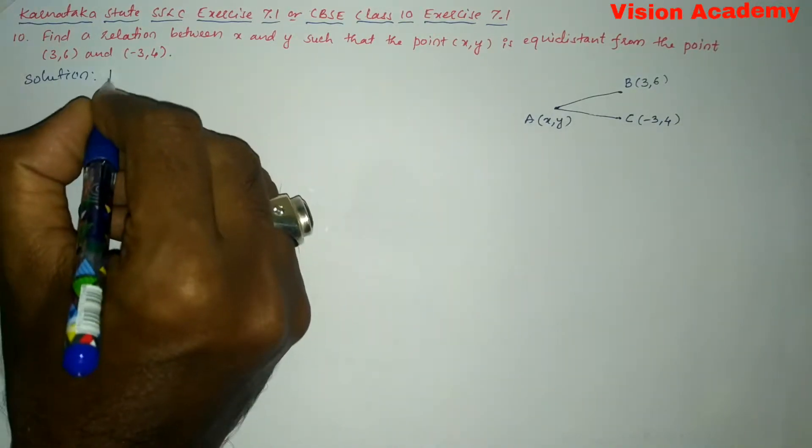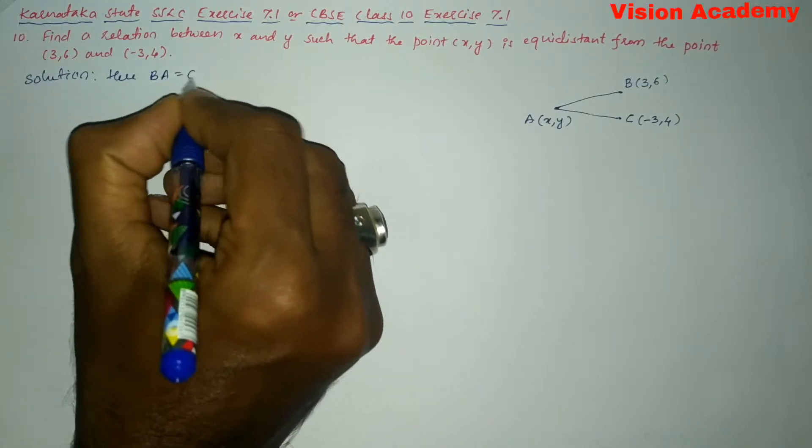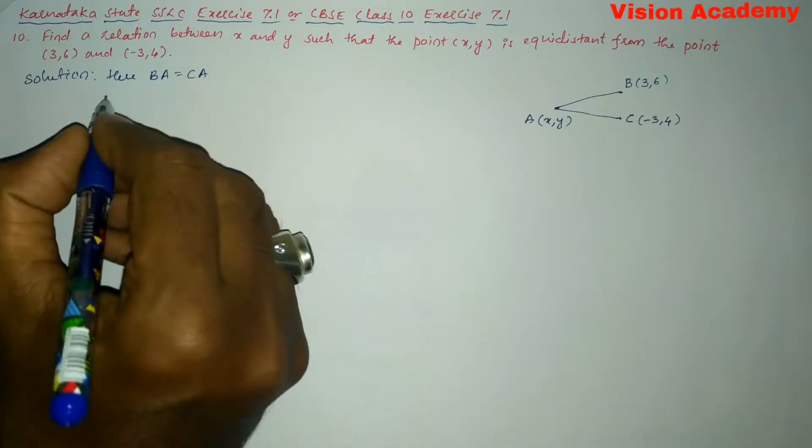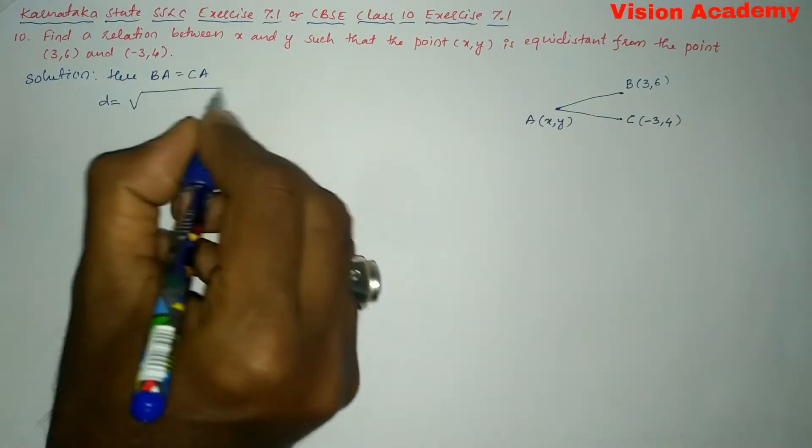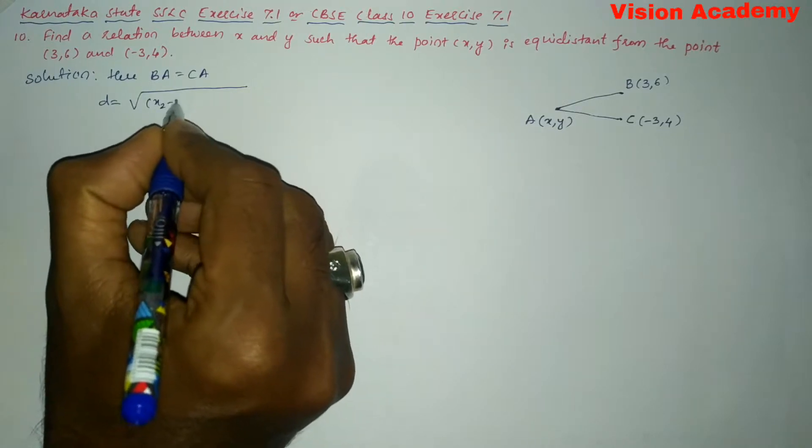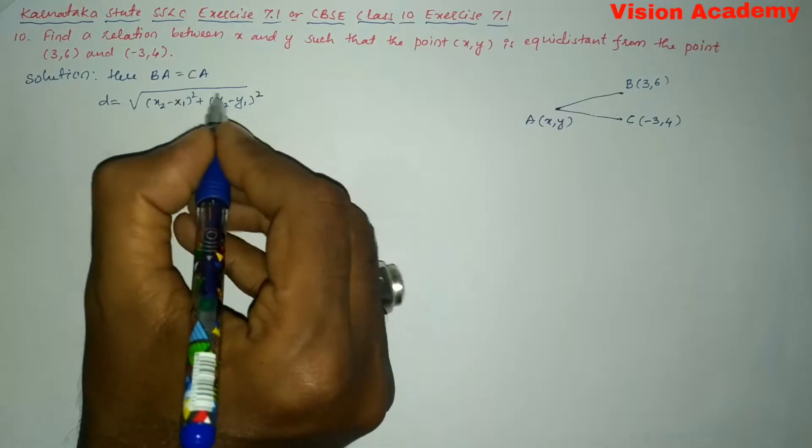Now, here we can write BA is equal to CA because they are at equidistant, and we can now write the distance formula: D = √[(X₂ - X₁)² + (Y₂ - Y₁)²].